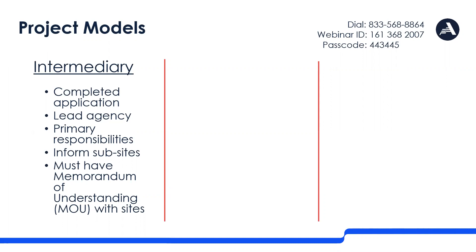The intermediary must have a Memorandum of Understanding — an MOU — with each of its sub-sites, because the sub-sites are actually different 501(c) nonprofit organizations. This MOU outlines the requirements and guidelines that the intermediary requires for that site to be part of its VISTA project. The intermediary is responsible for ensuring all sites follow what is outlined in the MOU and that each site is trained on their responsibilities. Each site is then responsible for day-to-day supervision of VISTA members and passing information up to the intermediary.